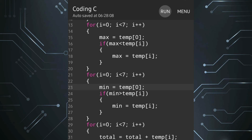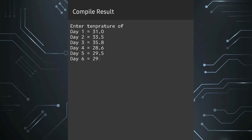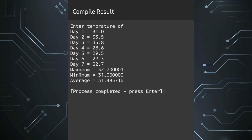Now let's run the corrected program. Entering temperatures for all seven days, you can see the maximum is 32.7, minimum is 31, and average is 31.4. So this is how we do this program.